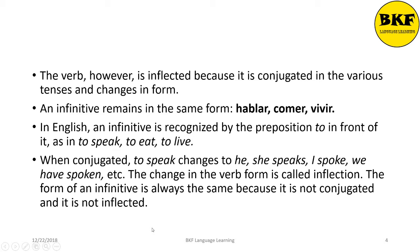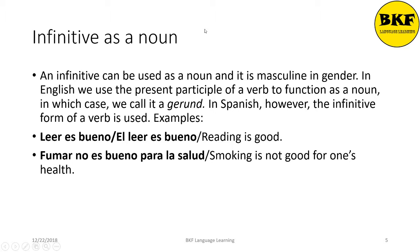The first use: infinitive as a noun. An infinitive can be used as a noun, and it is masculine in gender. In English we can use a present participle of a verb to function as a noun — we call it a gerund. In Spanish, however, the infinitive form of a verb is used. For example, 'Reading is good' becomes 'Leer es bueno' or 'El leer es bueno.' Another example: 'Smoking is not good for one's health' becomes 'Fumar no es bueno para la salud,' where 'para la salud' literally means 'for the health.'